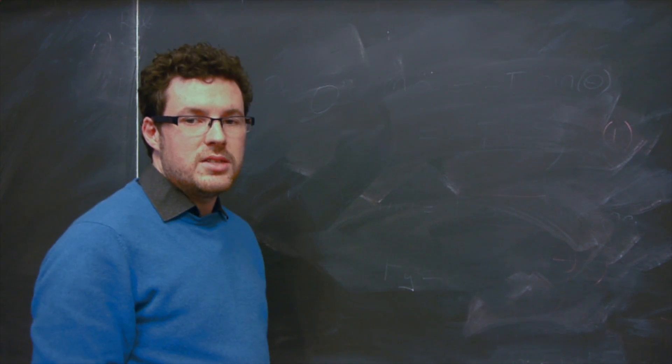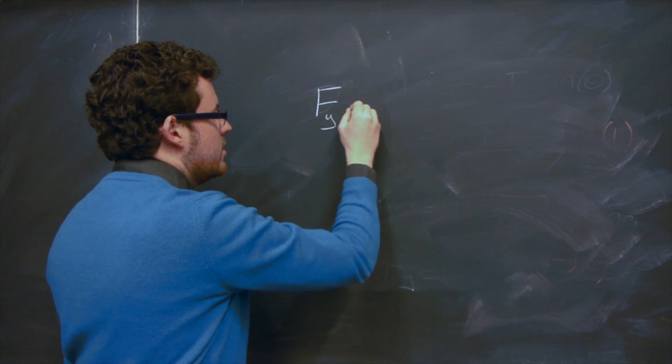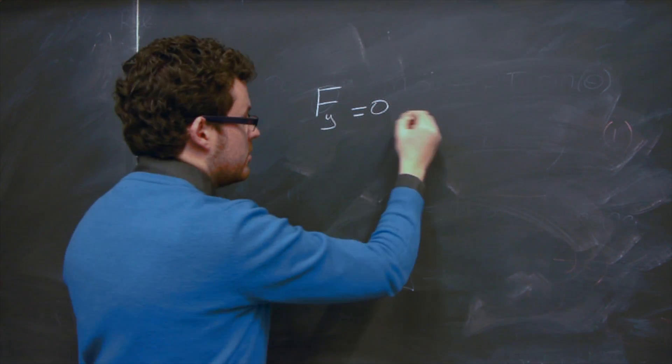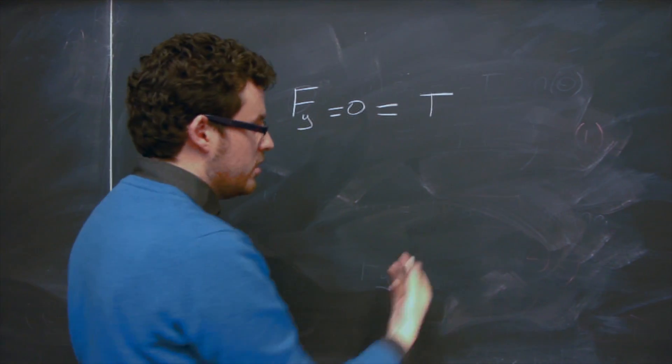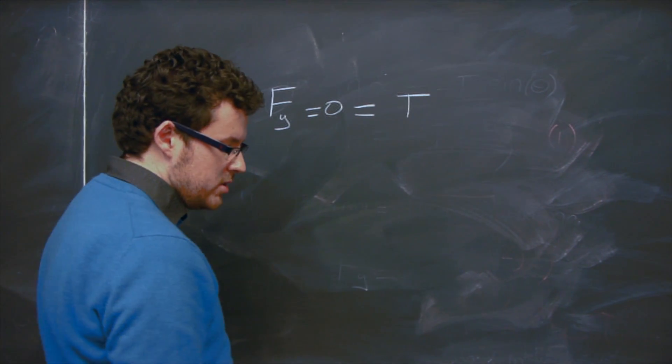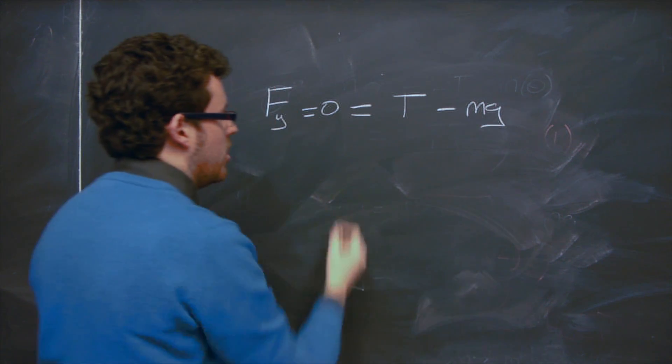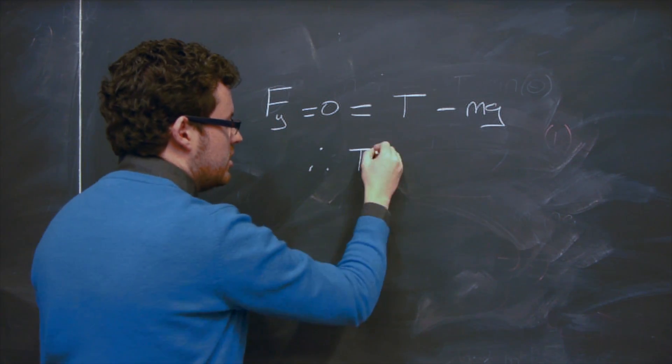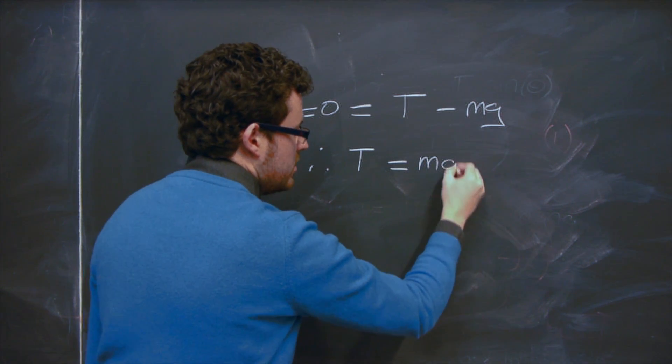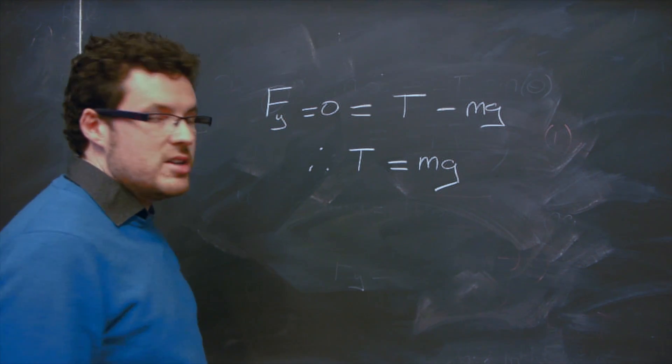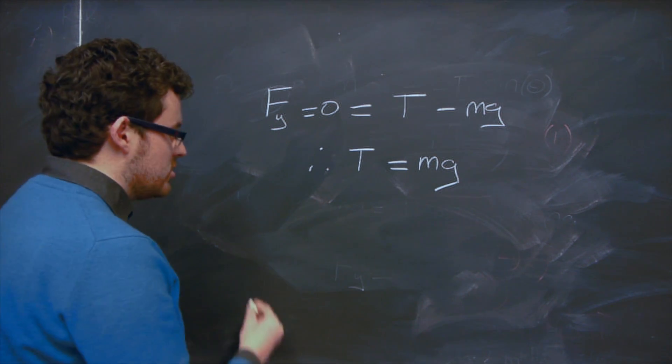So with equation 2 equal to zero, we can now re-express it in a lot simpler form. We can say Fy is equal to zero. Therefore, T times the cos of theta, which is very small, is going to be given as T times 1. So that's T minus mg. So therefore, we see the tension in the string is given by the mass of the ball times the acceleration due to gravity. So that cleans that up quite a lot. And now we can sub this into equation 1.